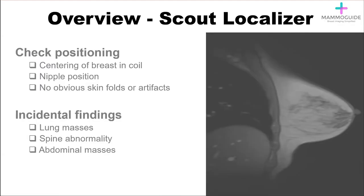The scout localizer sequence warrants a quick review. On this sequence, which is primarily used to aid the technologist in positioning the patient, you also want to check the positioning. Make sure that the breast is centered within the coil, make sure that the nipple is positioned in the center, and that there are no obvious skin folds or artifacts. Also, take a quick glance at the surrounding structures to make sure that there's not any incidental findings.